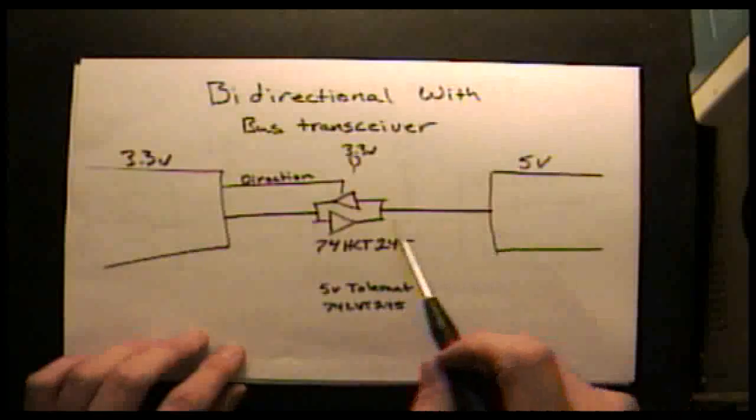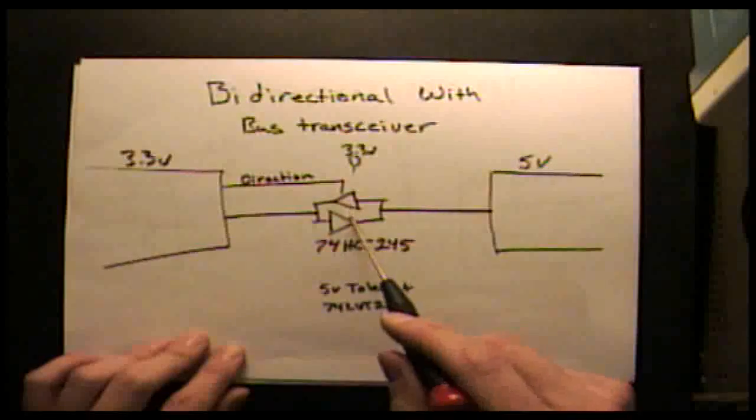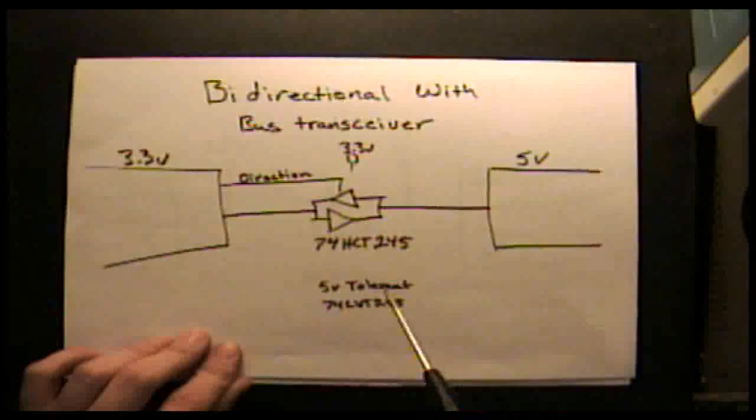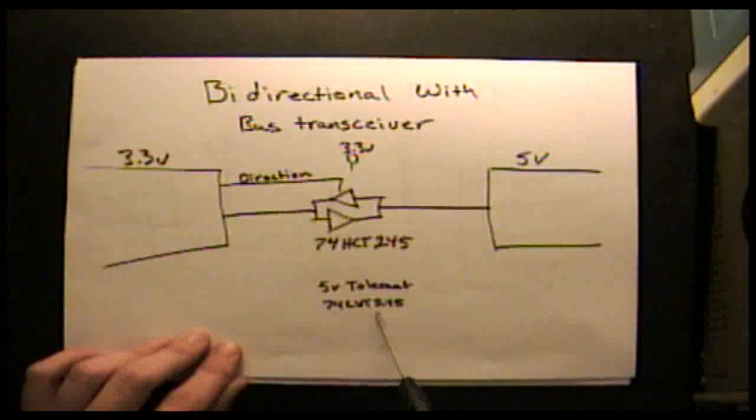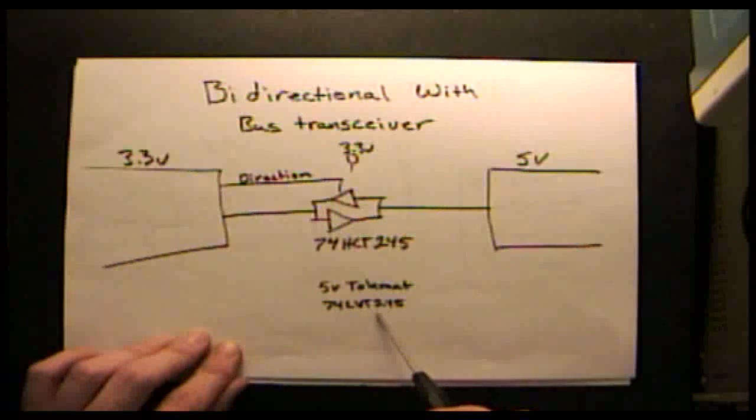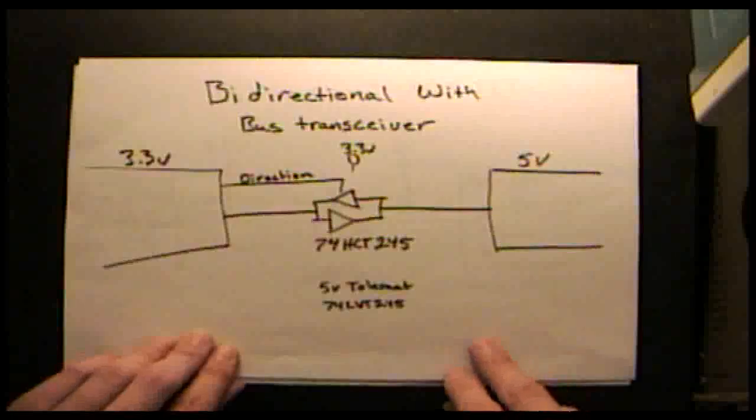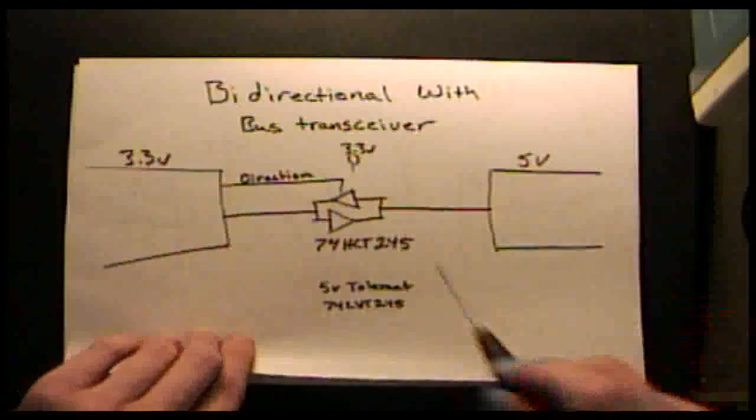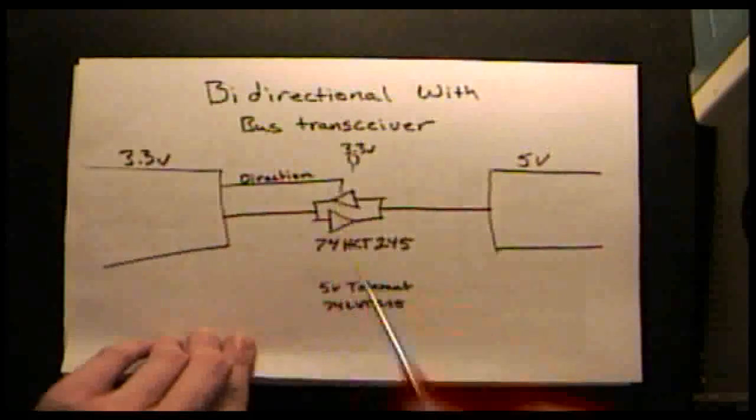If you need to control the direction of the transceiver, you'll need to pick a part such as the 74LVT245 that has 5-volt tolerant inputs so that the direction signal can be driven from the 5-volt side.